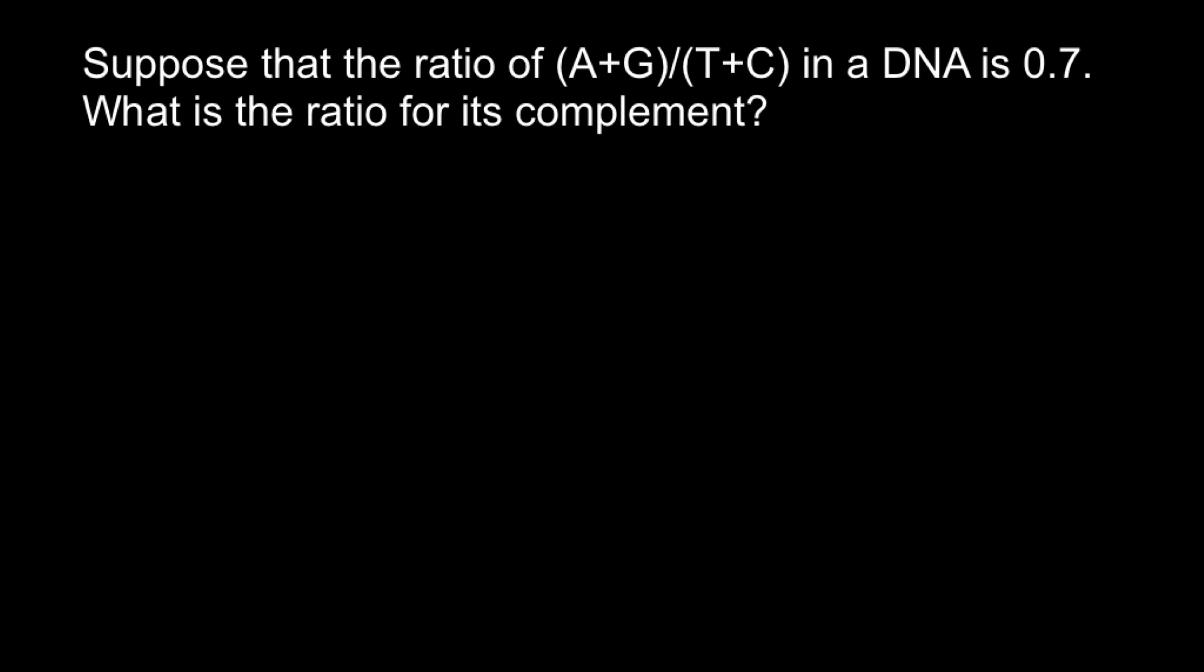So here is the problem. Suppose that the ratio of A+G to T+C in DNA is 0.7. What is the ratio for its complement?